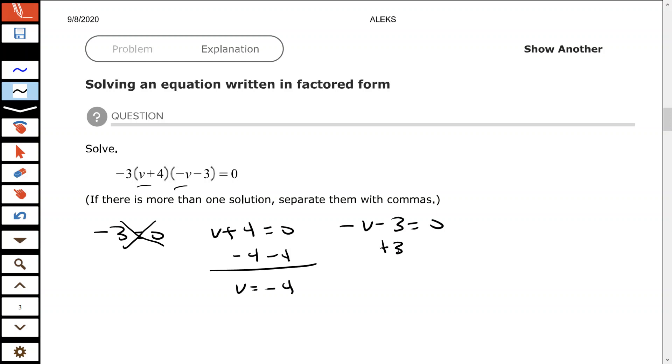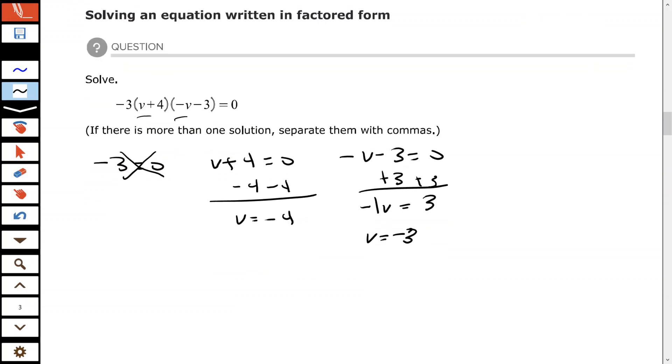So here add 3 to each side. Again, that's understood to be negative 1v. Divide both sides by negative 1. So v equals negative 4 or v equals negative 3.